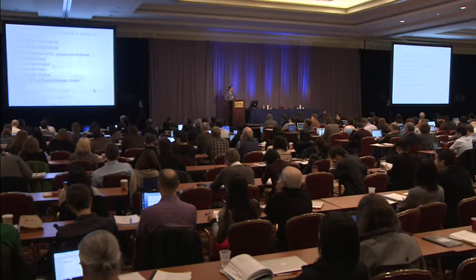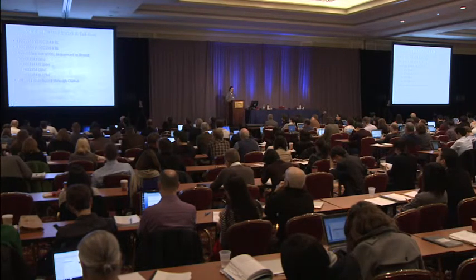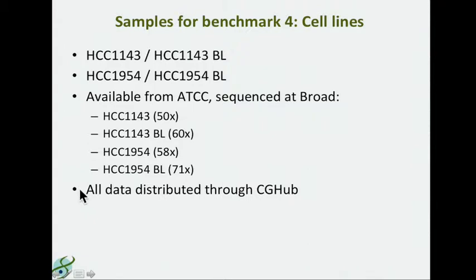The samples we're using to derive all of the BAM files distributed for Benchmark 4 are based on two pairs of cell lines: HCC 1143 and HCC 1954. Both 1143 and 1954 are derived from breast tumors, and they each have a paired normal sample derived from blood from the same patient. All of these lines are available through ATCC, and they've been sequenced to between 50X and 71X coverage at the Broad Institute. All of this data is publicly distributed through CGHub.